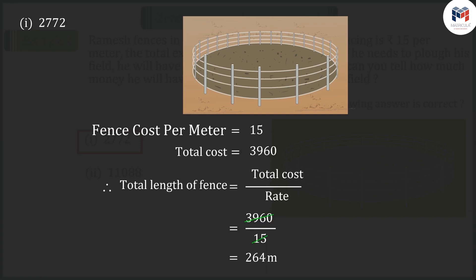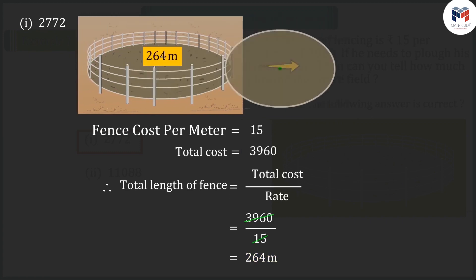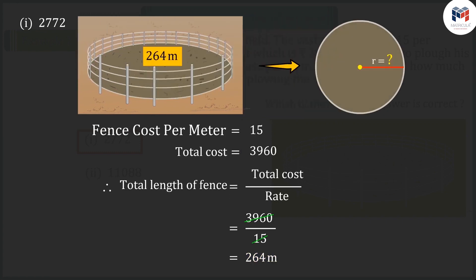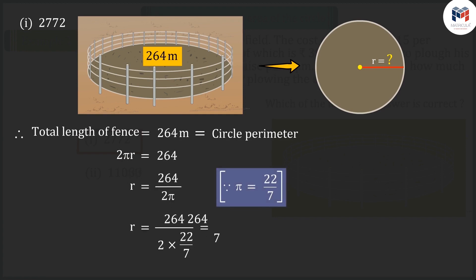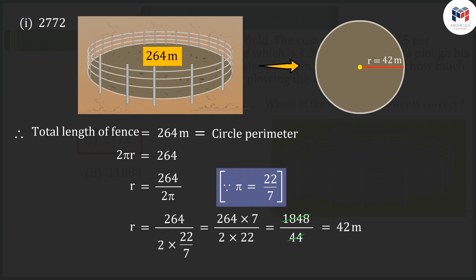It is given that the total cost of the fence at the rate of 15 rupees per meter is 3,960 rupees. This means the total length of the fence is 264 meters. To find the radius, we will use the formula for the circumference of the circle, which when solved gives the value of radius as 42 meters.